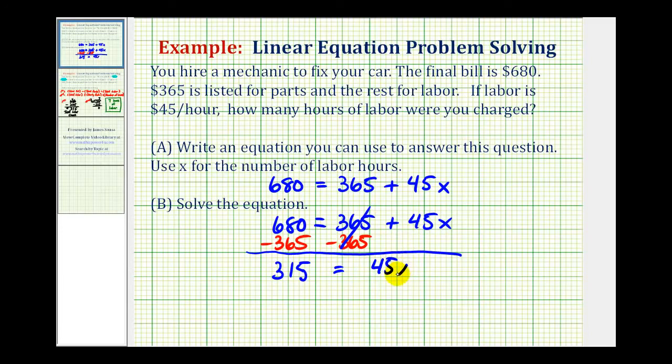Then to solve for x, we divide both sides by 45, which we already did previously. So we know this quotient equals 7. Again, giving us the same answer: we were charged 7 hours of labor.